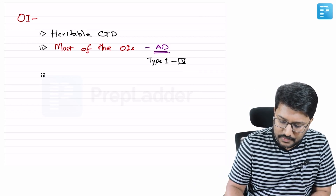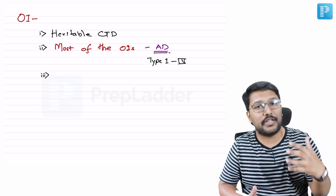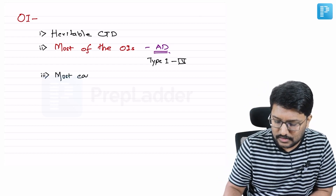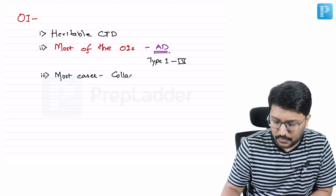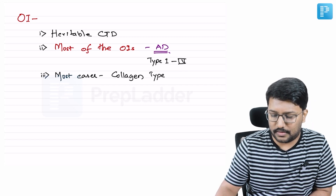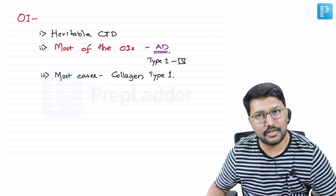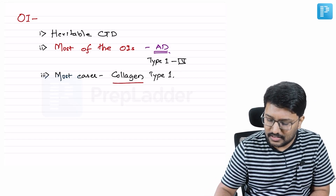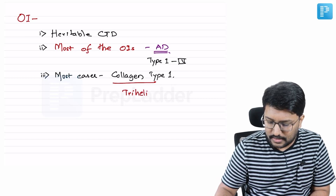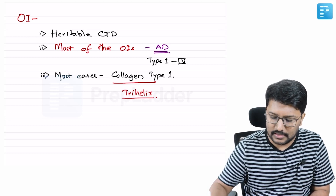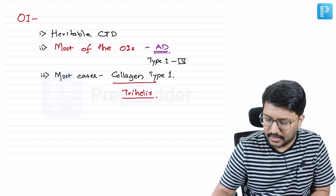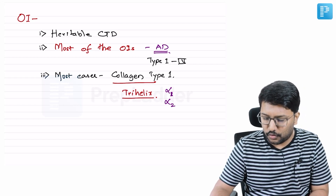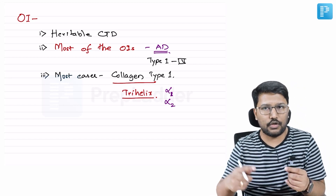Regarding the defect: because there are different types, there may be different defects. In the majority of cases, the defect is in collagen — specifically Type 1 collagen. Collagen is a trihelix with three parts: two alpha-1 molecules and one alpha-2 molecule form the trihelix structure.